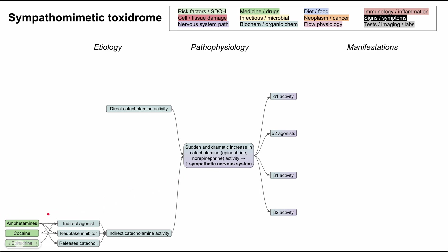These drugs tend to be drugs of abuse and include amphetamines or derivatives (including some ADHD drugs), cocaine, and ephedrine including pseudoephedrine. Amphetamines do all three: they're indirect agonists, reuptake inhibitors, and they release catecholamines. Cocaine does the first two — it's an indirect agonist and a reuptake inhibitor. Ephedrine and pseudoephedrine do the first and third: they're indirect agonists and they release endogenous epinephrine and norepinephrine, but don't themselves act exactly like epinephrine and norepinephrine.